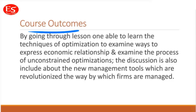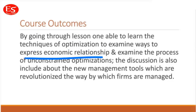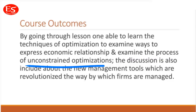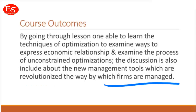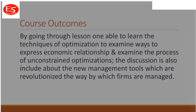Regarding course outcomes, after completing this course students will understand the basic techniques of optimization and the ways to express economic relationships. We also examine the process of unconstrained optimization, discuss new management tools that have revolutionized the field, and understand by which methods firms are managed using these new management tools.